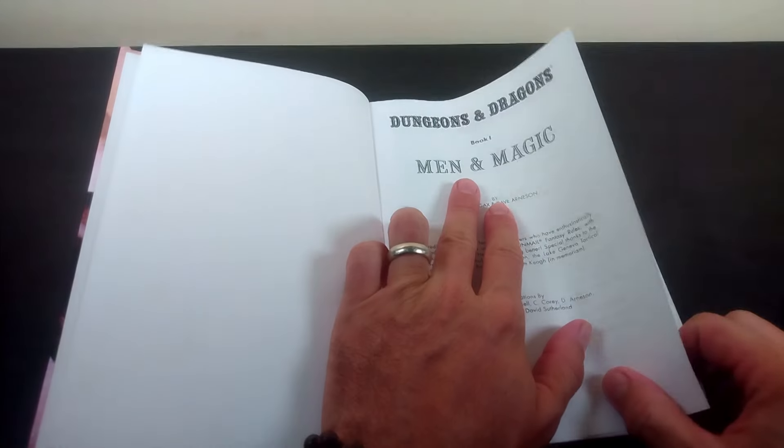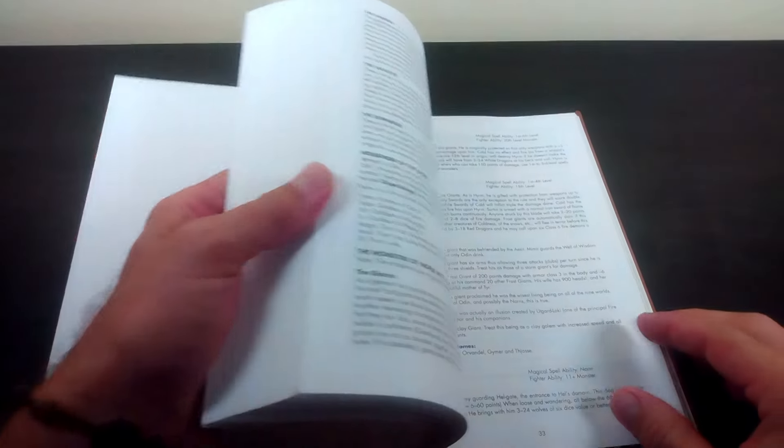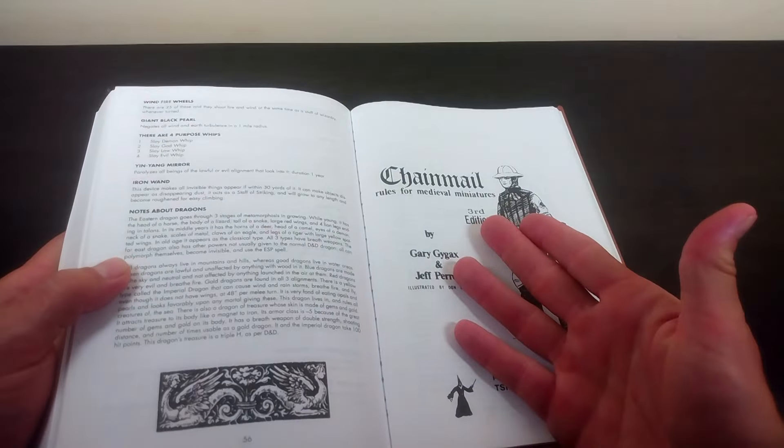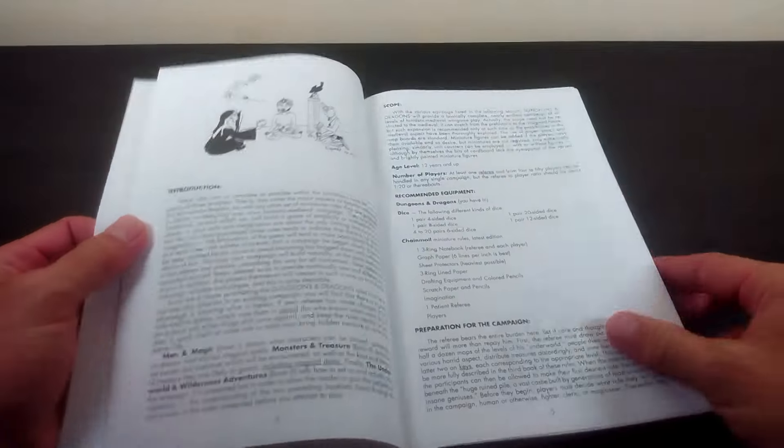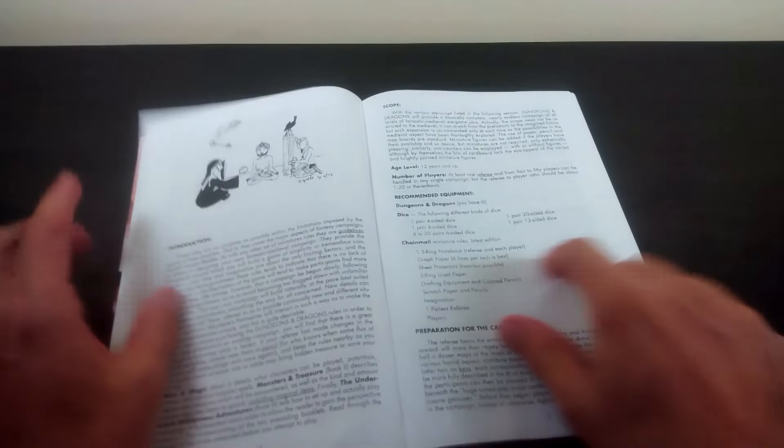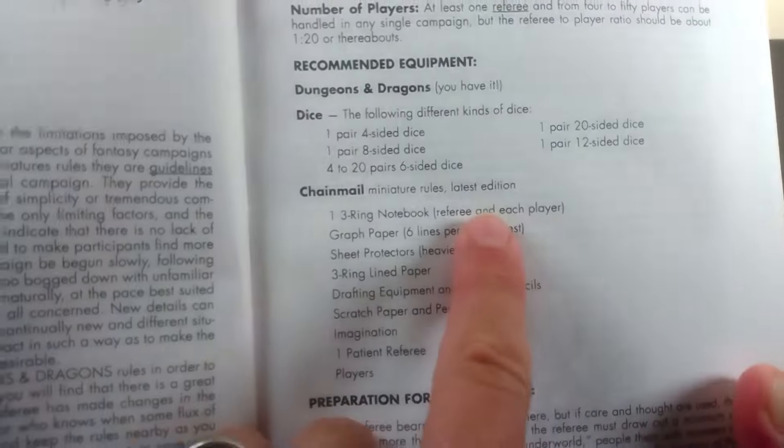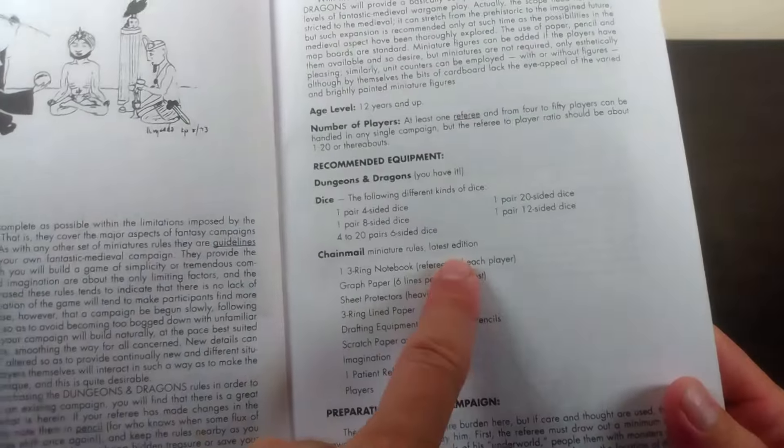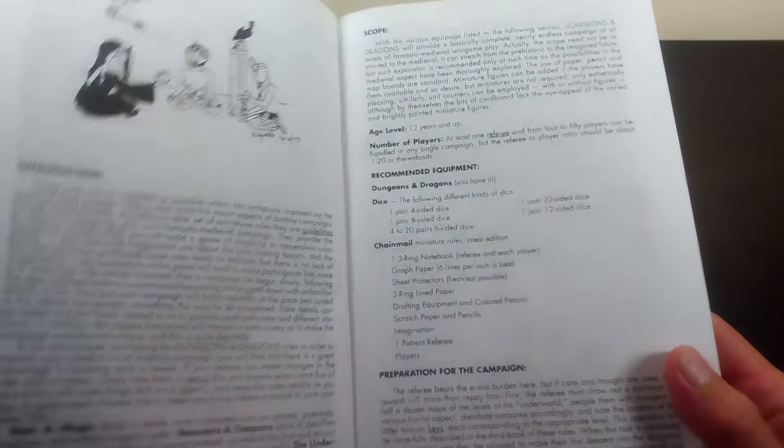Maybe you play original Dungeons and Dragons, there it is - Men and Magic, which includes Chainmail, because if you're not using Chainmail you're missing one of the game parts of equipment. Chainmail miniature rules, look at this latest edition - I don't know, I'm on two, three, four, five, I don't think they ever did four and five.